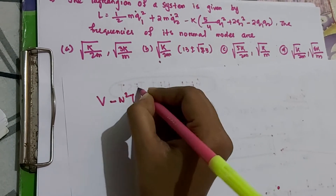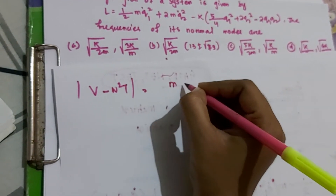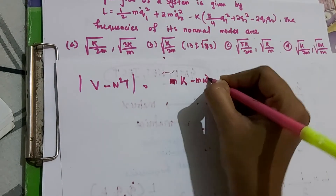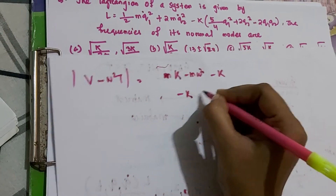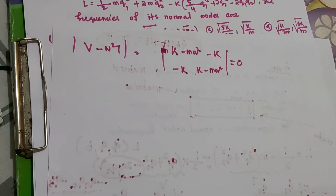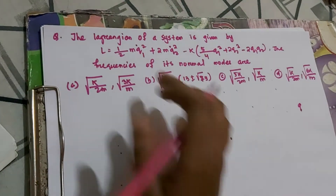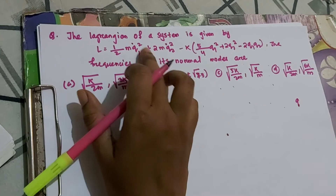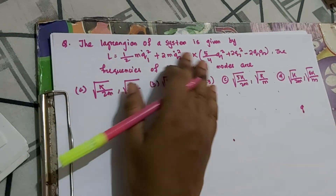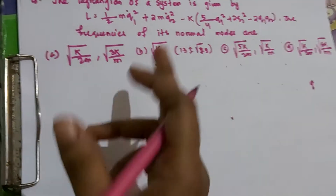So V − ω²T becomes: [k − mω², −k; −k, k − mω²] = 0. This is the process you have to follow in order to solve such type of questions. Now we will jump to the actual CSIR NET question. The Lagrangian is given in terms of q₁ dot and q₂ dot (sometimes written as x₁ dot, x₂ dot), and you have to accordingly form the determinant.